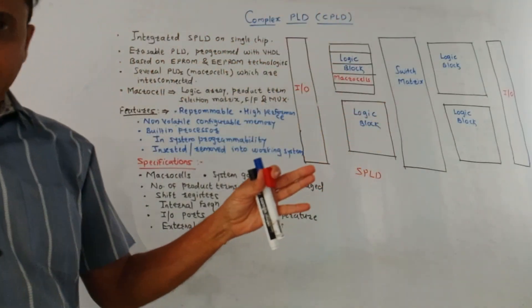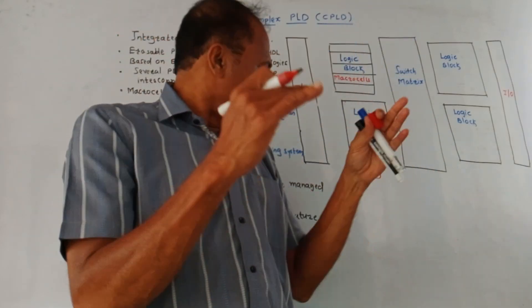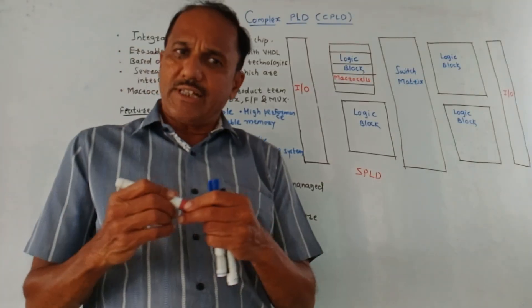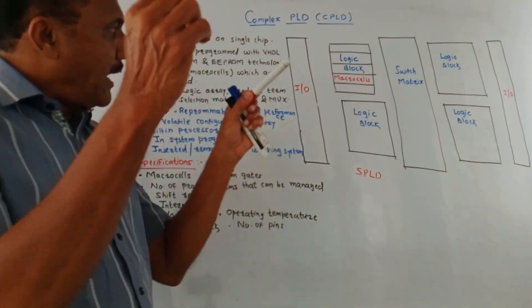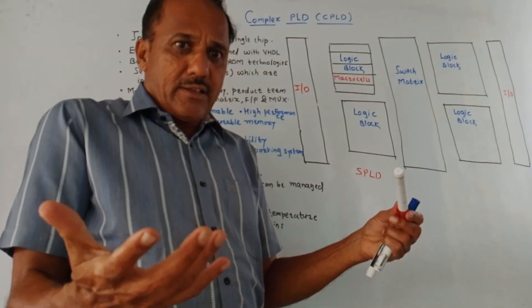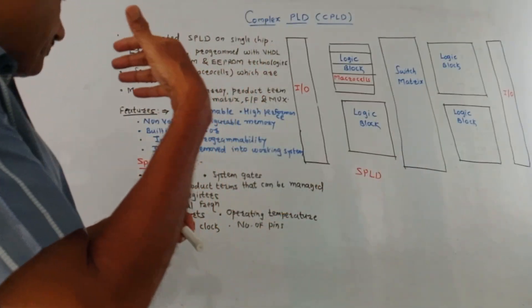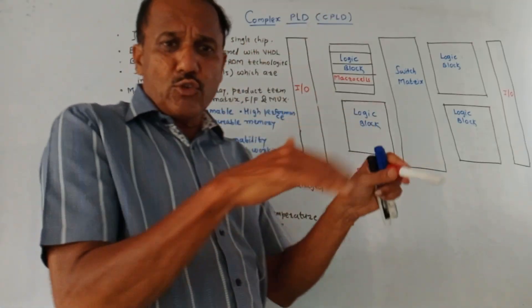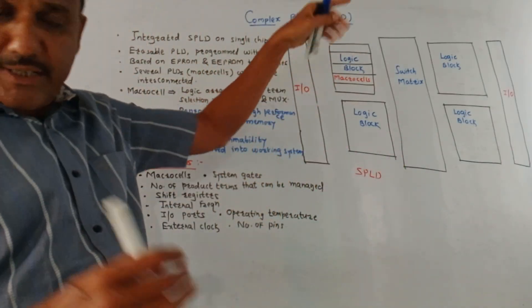So in a very simplified manner, Complex PLD consists of N number of Simple PLDs. From the exam point of view, we may expect questions like: what is the necessity of CPLD, draw the architecture of CPLD, draw and explain the architecture of CPLD along with the concept of macro cells and so on. All these things we will discuss in today's session. So this is the architectural diagram of CPLD.